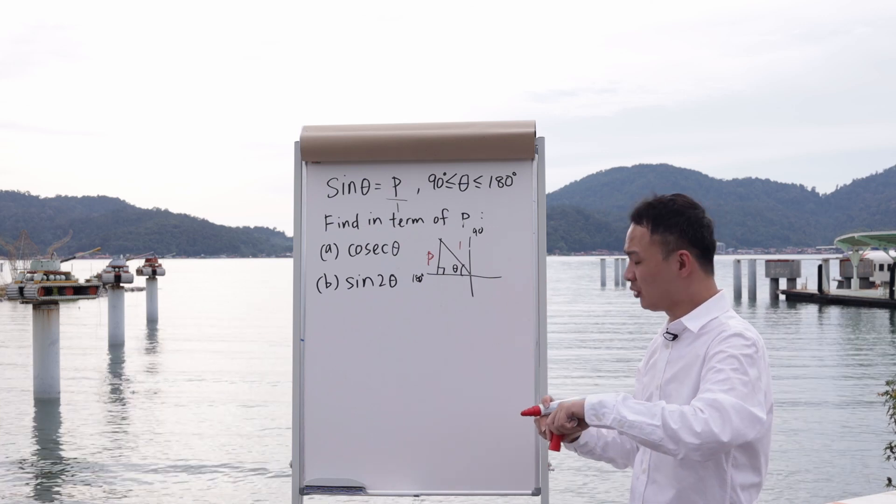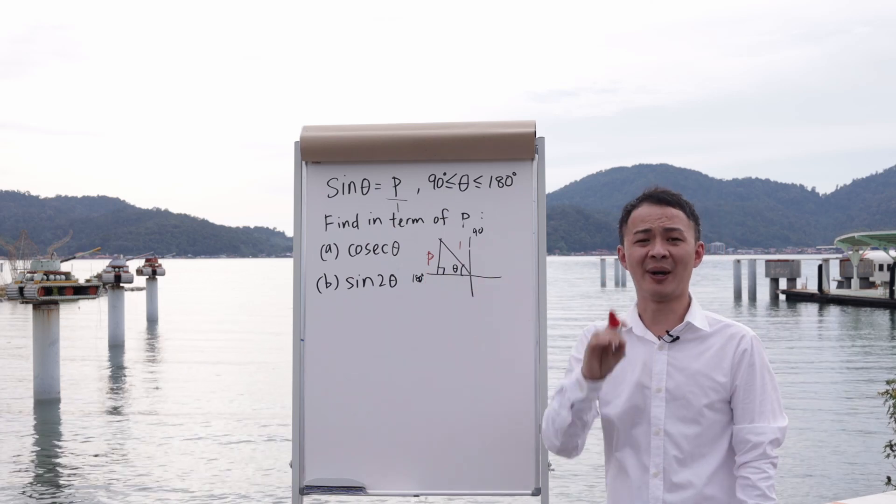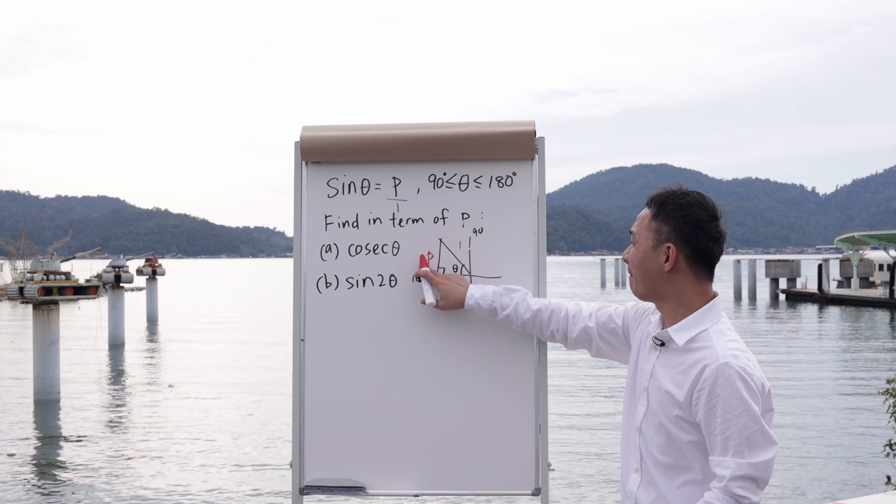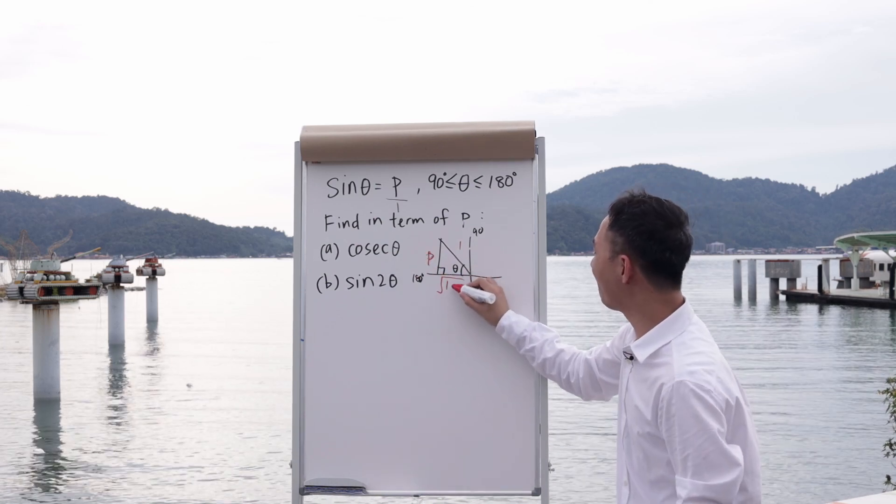Now you need to find the adjacent. To find the adjacent, you use the Pythagorean theorem: 1 squared minus p squared, then square root it. So it will be square root of (1 minus p squared).